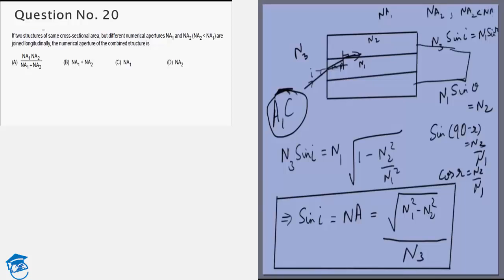So first of all, let's try to trace the movement of this ray. This is theta, so this will be theta. Now it's reflection, not refraction, so laws of reflection will be followed. So this will be theta, theta, theta, theta, theta, theta, so this will be 90 minus theta, that is r.